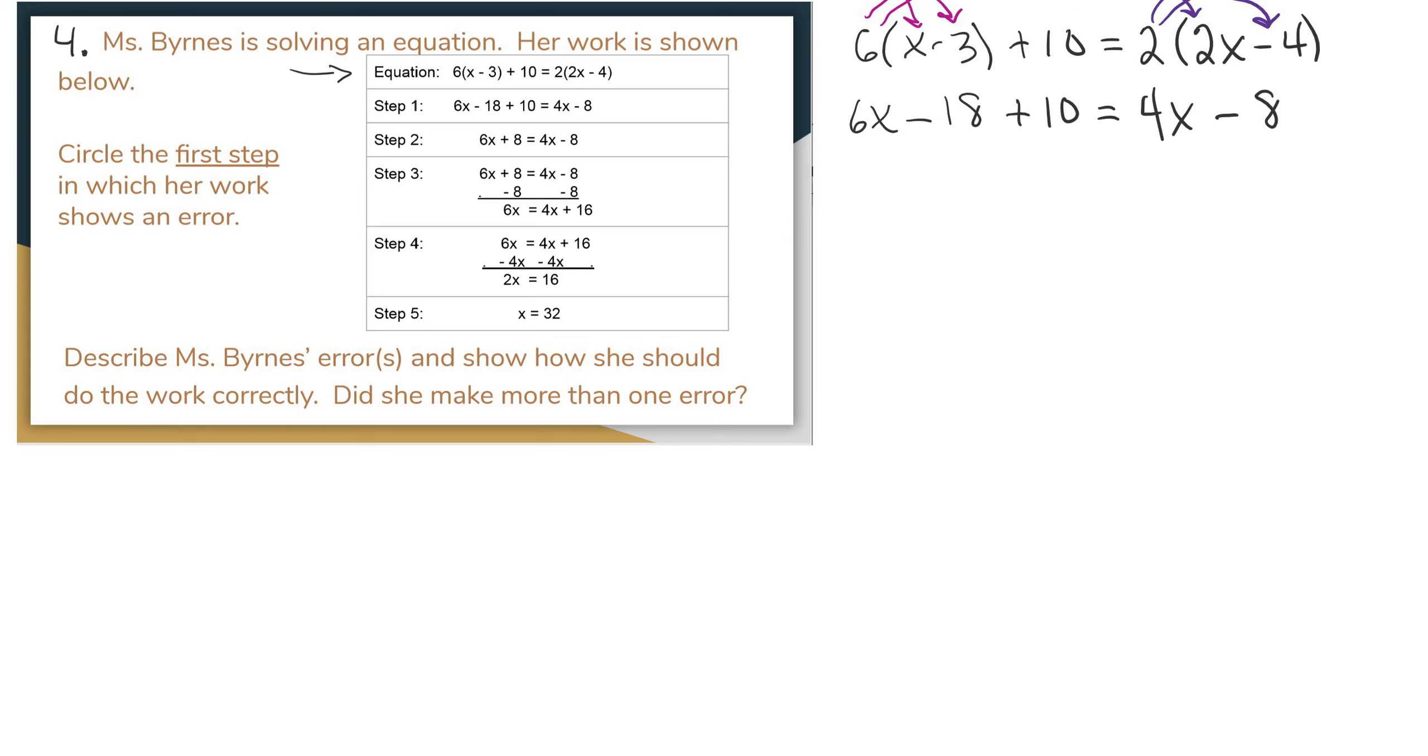I'm going to look at the first step, step 1. And it looks like they have 6x minus 18 plus 10 is equal to 4x minus 8. So far everything looks good.